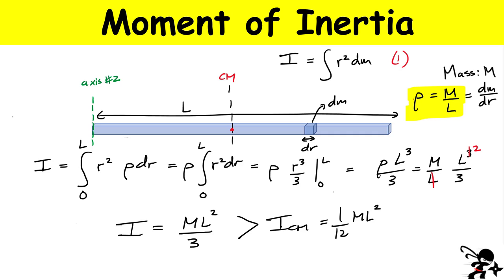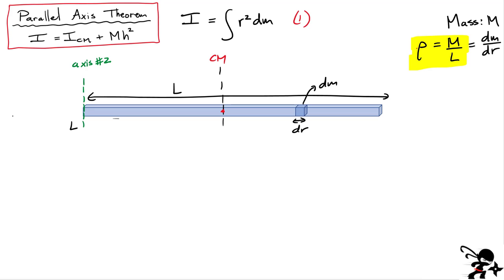I now want to look at something called the parallel axis theorem and solve this same problem using it. The parallel axis theorem states that the moment of inertia through any axis parallel to the center-of-mass axis equals the moment of inertia through the center of mass plus M times H squared, where H is the distance between the two axes. For axis two at the edge, H is simply half the length of the beam, L over 2.